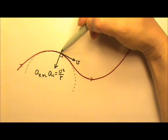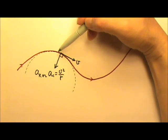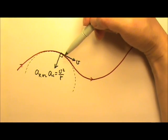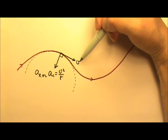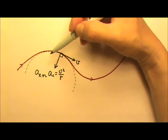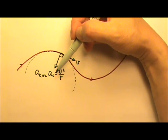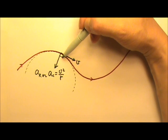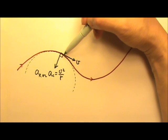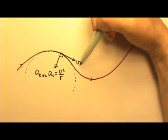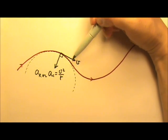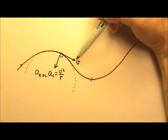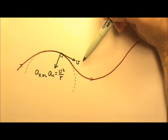The velocity can only be tangent to the path, if the velocity is not zero. This means the centripetal or radial acceleration is always perpendicular to the velocity — again, if they are not zero.